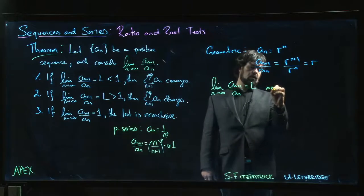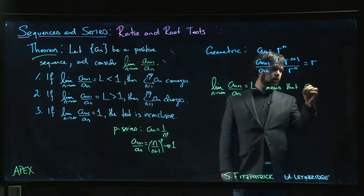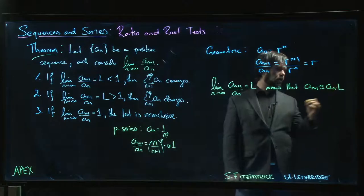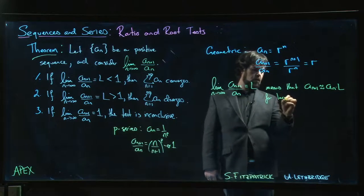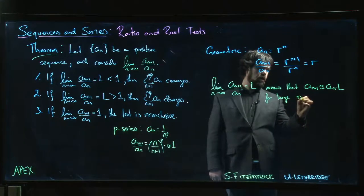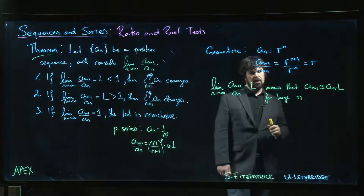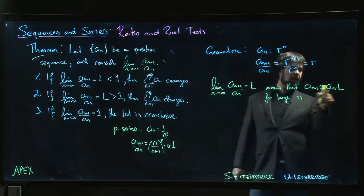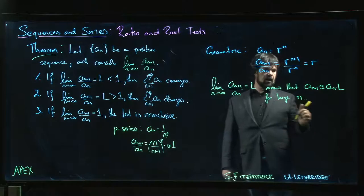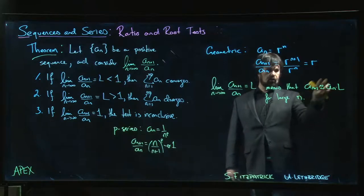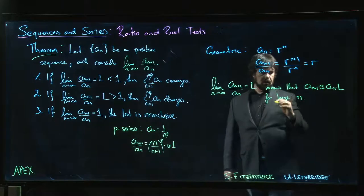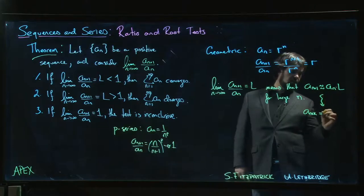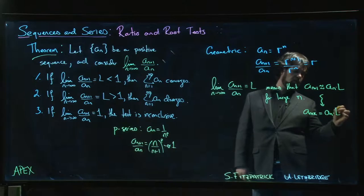Well, this sort of means that a_n+1 is approximately a_n times L for large n. This is not a proof by any means, but just think of it this way: a_n+1 is just L times a_n, and then a_n+2 would be L times a_n+1, would be L times L times a_n. You can sort of get from here to say, well, that means that a_n+k is like a_n times L to the k.